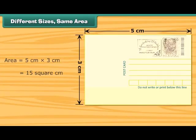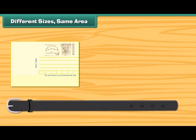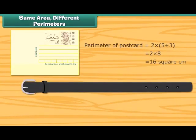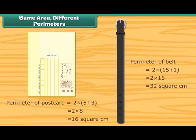Look at this postcard. Its area is equal to 15 square centimeters. What about the area of this belt? It is also 15 square centimeters. Both the postcard and belt are of the same area, but their sizes are different. What about their perimeters? Do both have the same perimeters? Perimeter of the postcard is equal to 16 centimeters while the perimeter of the belt is 32 centimeters. Thus, things with the same area can take different forms, and the perimeter of such things can be same or different.